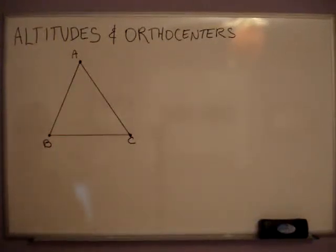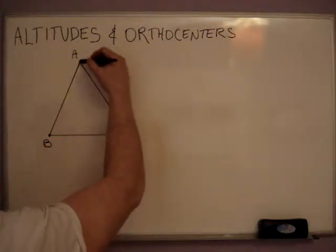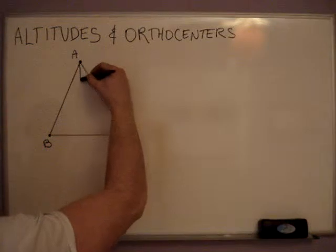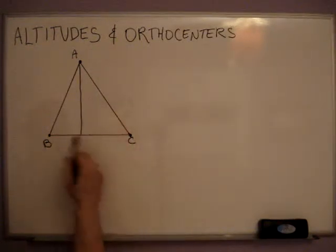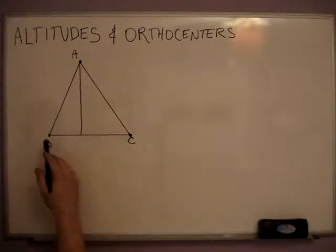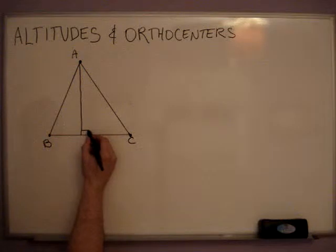We're going to take a look at altitudes and orthocenters. First, let's go over what an altitude is. An altitude is a line which starts at a vertex of a triangle, comes straight across the center of the triangle, and hits the opposite line, or line segment—in this case it's BC—at 90 degrees.